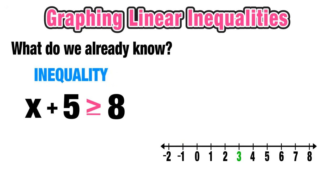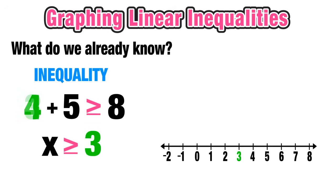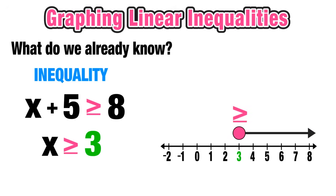What if instead of an equal sign this was an inequality? Now we have x plus 5 is greater than or equal to 8. Solving this gives x is greater than or equal to 3, meaning x can be 3 or any value larger than 3. We use a closed circle since it's greater than or equal to, and shade to the right. Values less than 3 are not solutions.